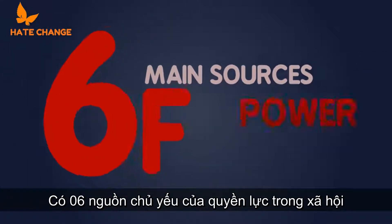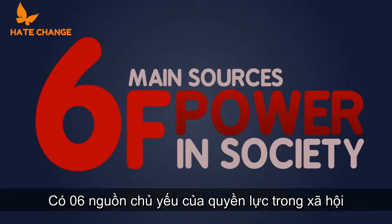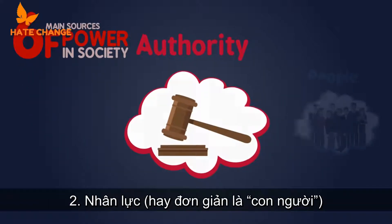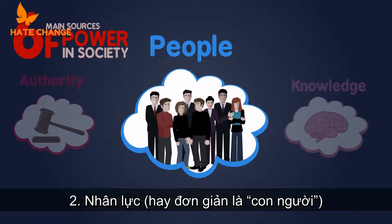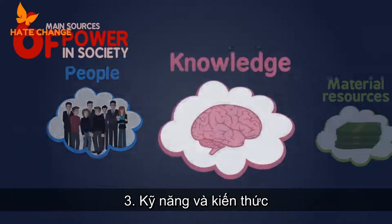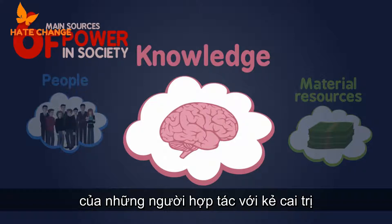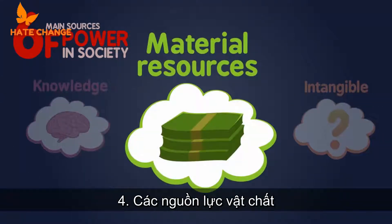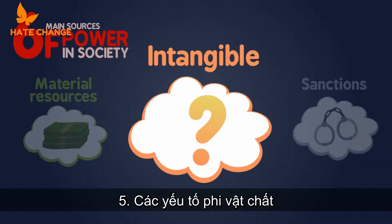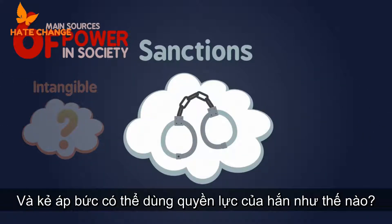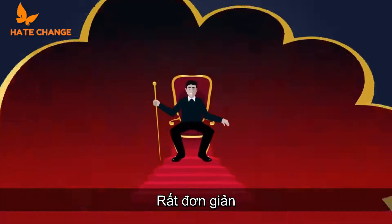There are six main sources of power in society: 1. The authority of the ruler. 2. Human resources, or simply put, the people. 3. The skills and knowledge of those who cooperate with the ruler. 4. Material resources. 5. Intangible factors. And 6. Sanctions.